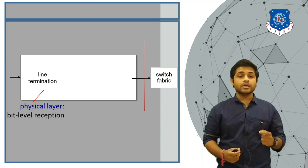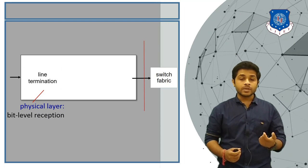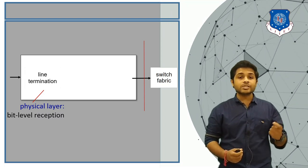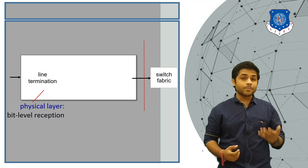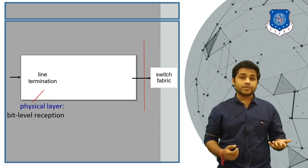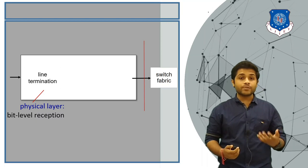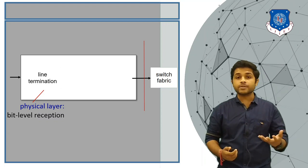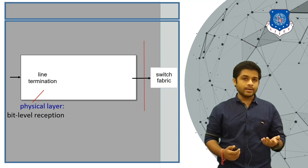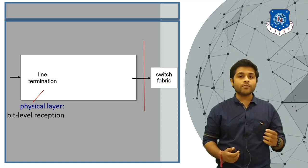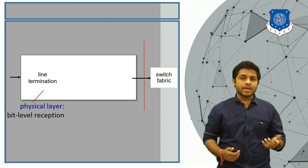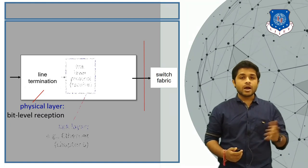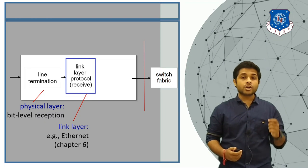Let's see what is inside the input port. The first block is called line termination. Using this block, the router can receive the signal, which can be in the form of electromagnetic waves or voltage levels. If the router is connected wirelessly, the received signal will be in the form of electromagnetic waves, but if connected by wire, signals are in the form of voltage levels. This block is generally situated in the physical layer.